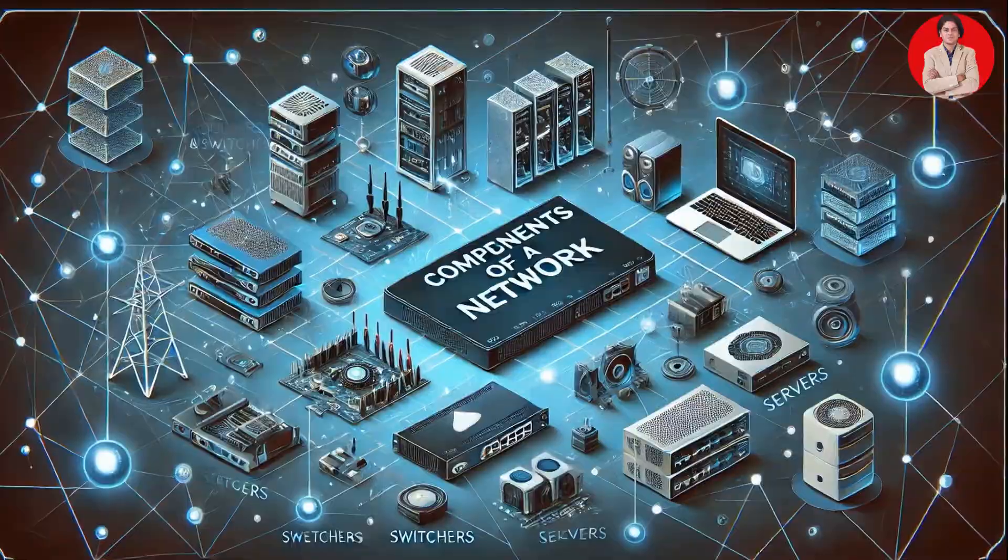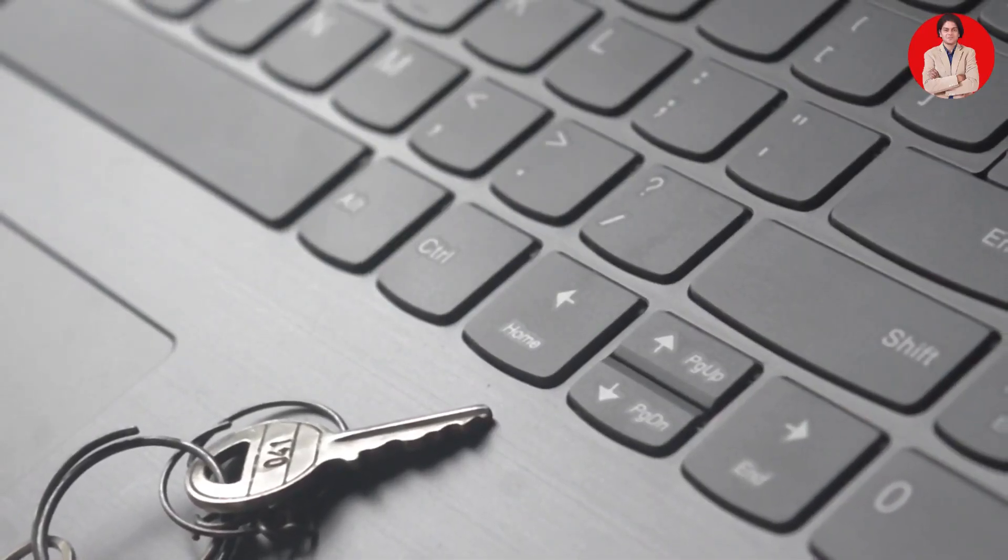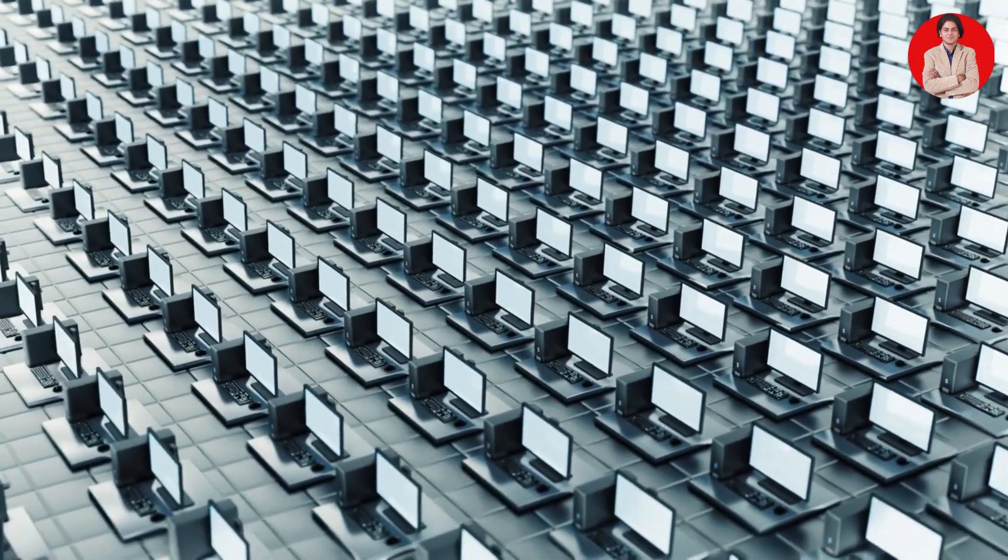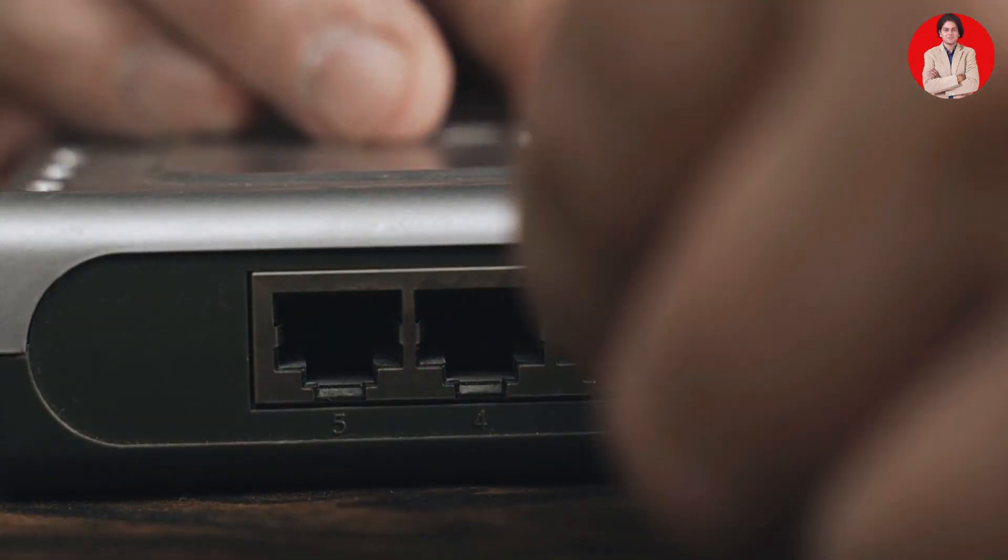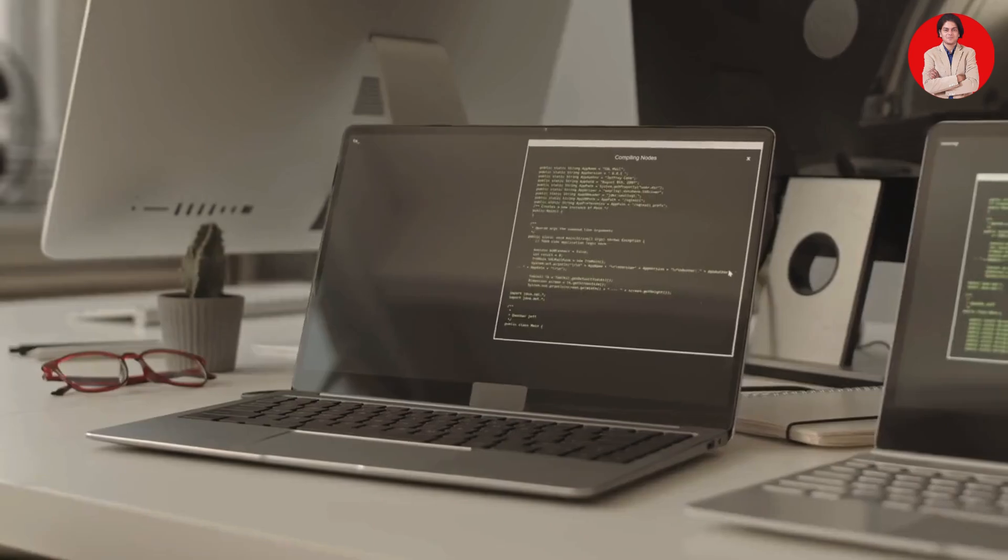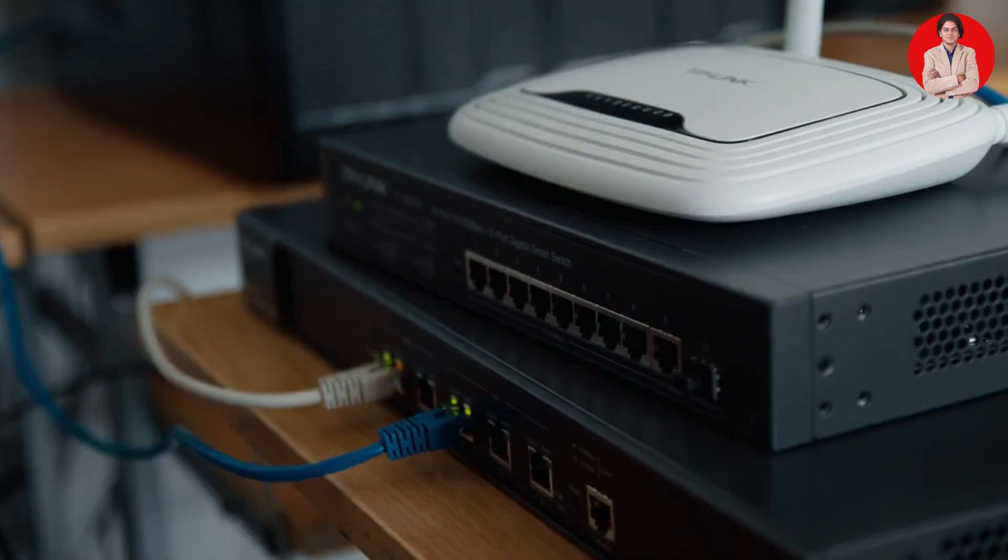Components of a network: A typical computer network consists of several key components working together. Computers and devices: The devices that are connected to the network, including desktops, laptops, smartphones, tablets, servers, and even smart appliances.